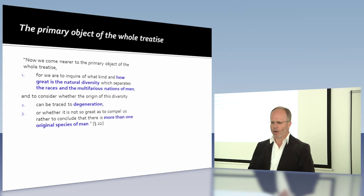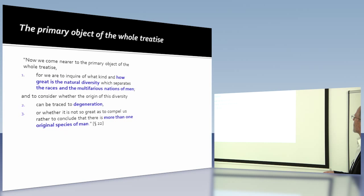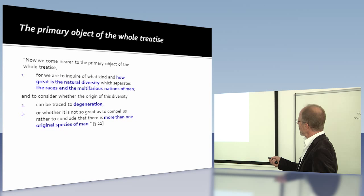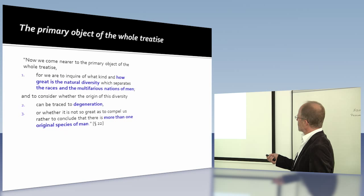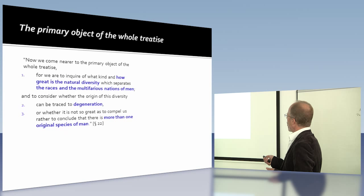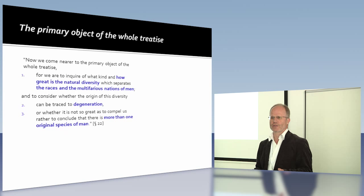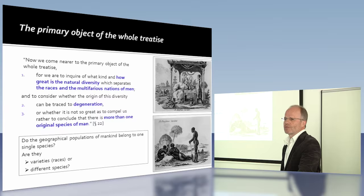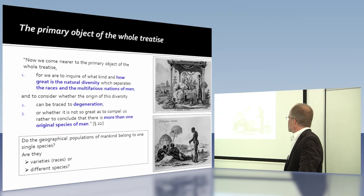Blumenbach clearly says what the primary object of the whole treatise is. A quote from his book, paragraph 22: 'We come to the primary object of the whole treatise. We will inquire of what kind and how great is the natural diversity which separates the races and nations of men, and to consider if the origin of this diversity can be traced back to degeneration within a species, or if there are more than one original species of man.' So the question is: do the geographical populations of mankind belong to one species? Are they varieties or different species?